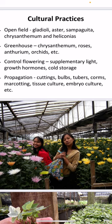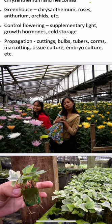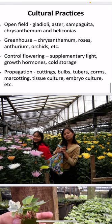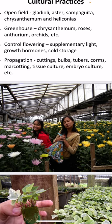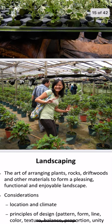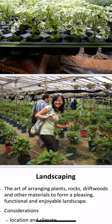Control of flowering is also a very important practice which uses supplementary light, growth hormones, and cold storage. Most of these crops are propagated through cuttings, bulbs, tubers, corms, and through tissue culture especially in orchids, and embryo culture. As you can see in the photo, it has a black polyethylene cover to extend its night duration to induce flowering.